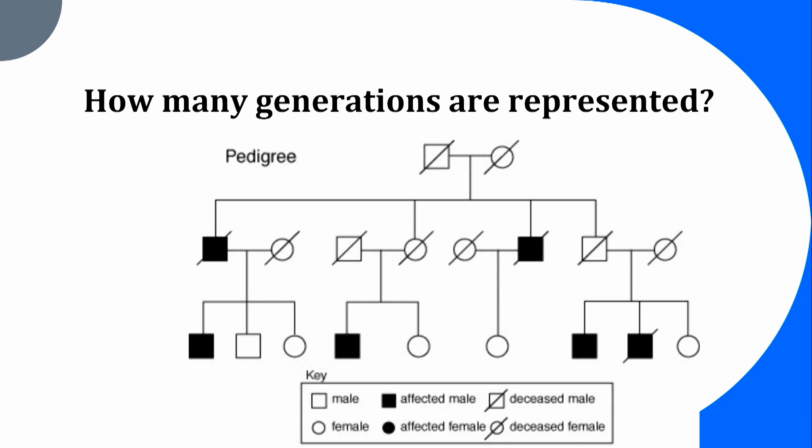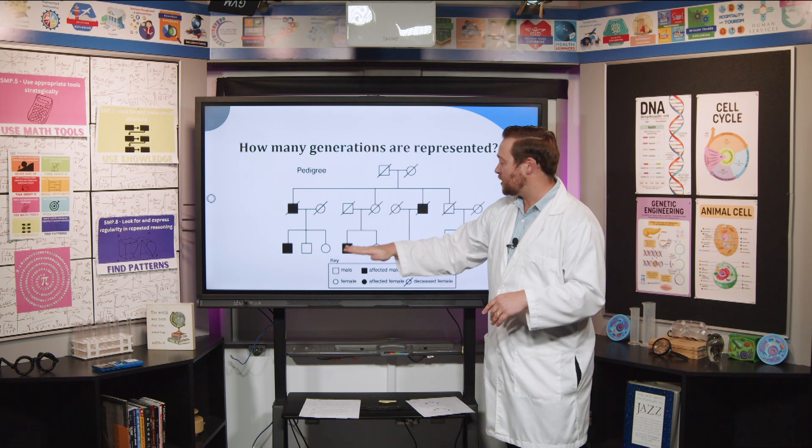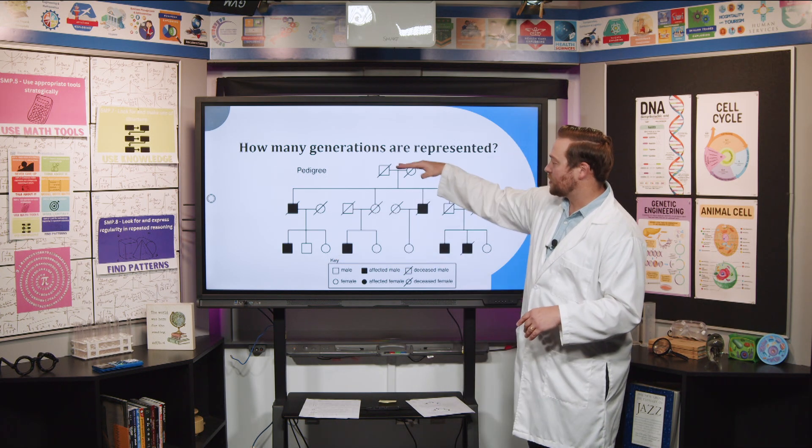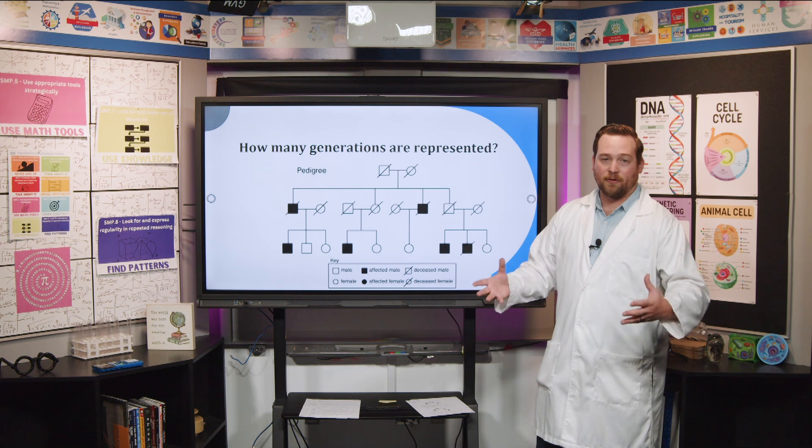Here's another question: how many generations are represented in this pedigree? This is three generations. Every horizontal line is a generation. So the first one — just a square and a circle — that's one generation. This is the second generation, and then at the bottom is the third generation. So this is three generations of a family.